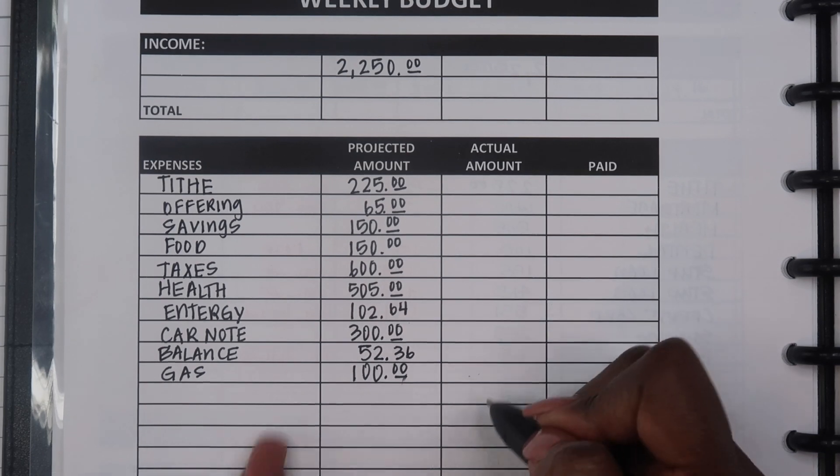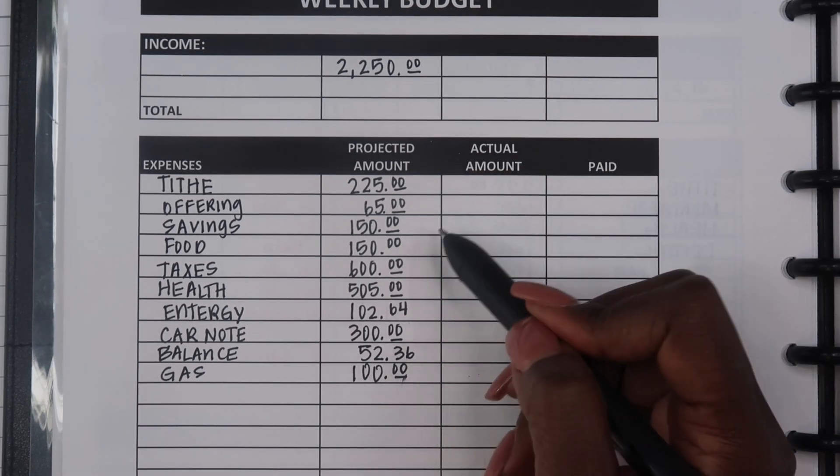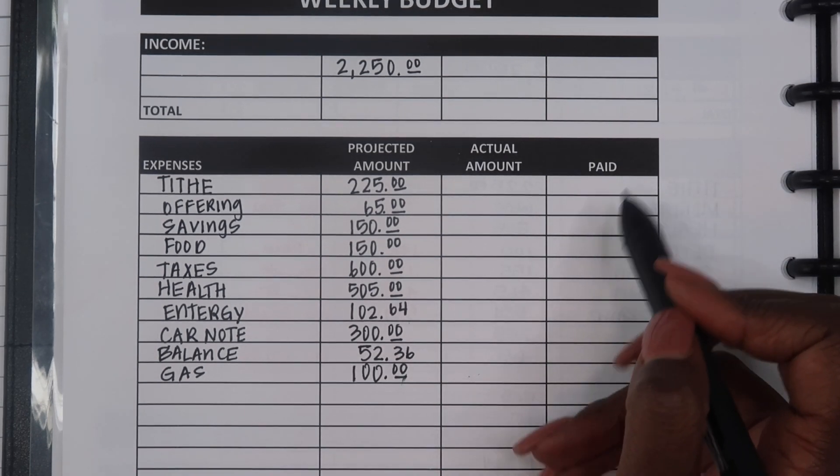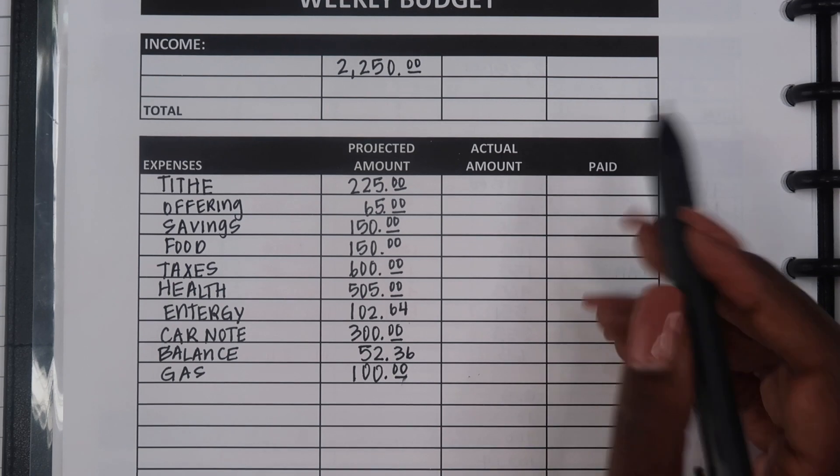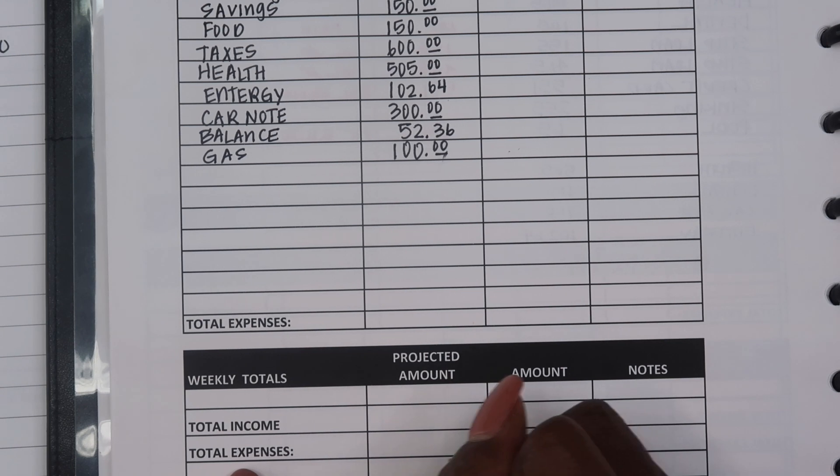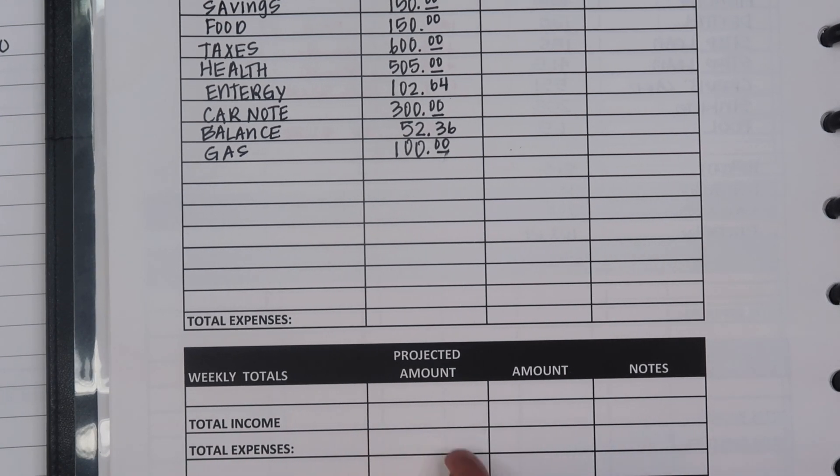So the balance is $52.36. Basically when I get paid I will write down all of the actual amounts here and then check off that it's been paid. And then at the bottom here I will keep a total of the income and all of the expenses.